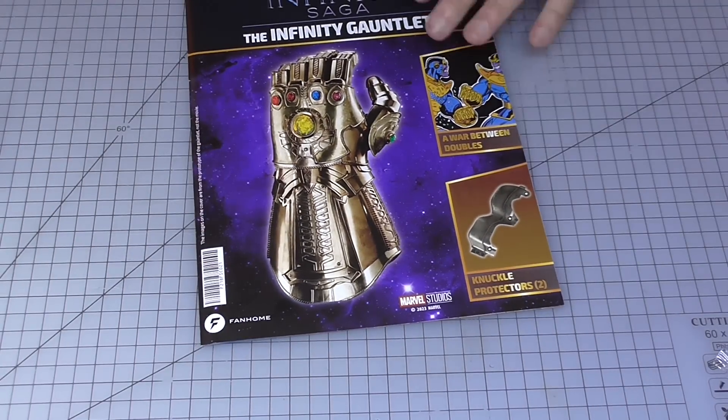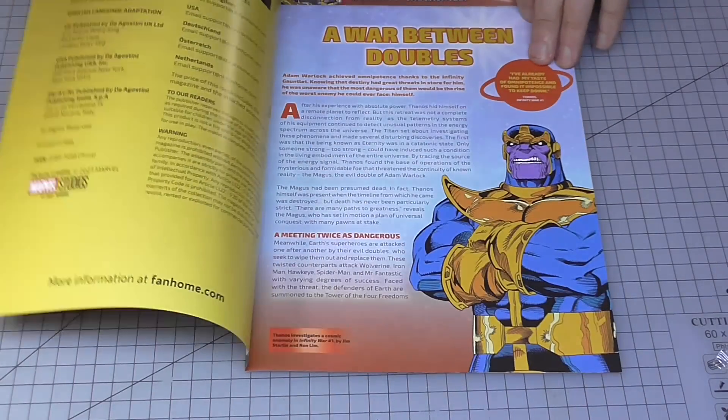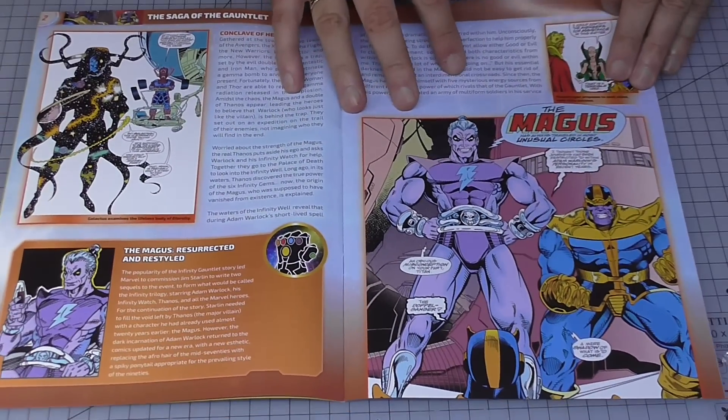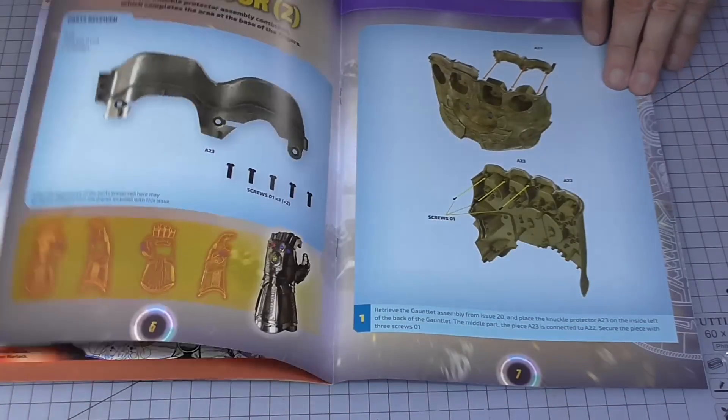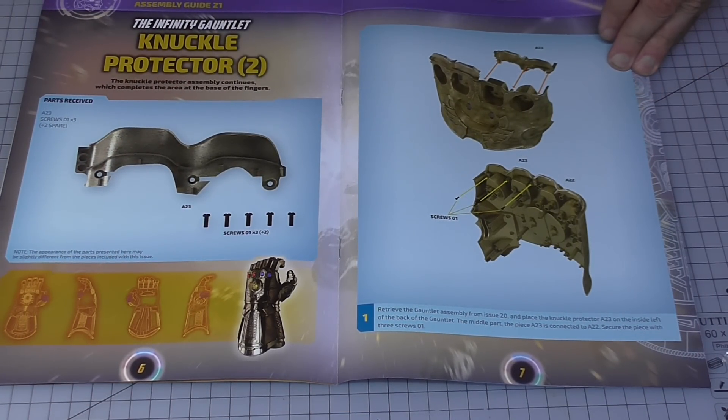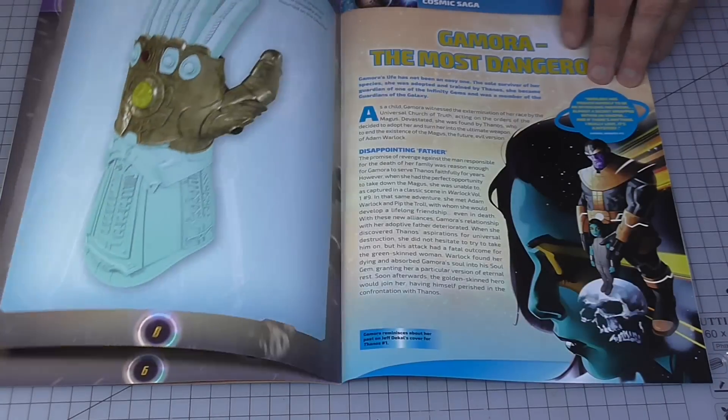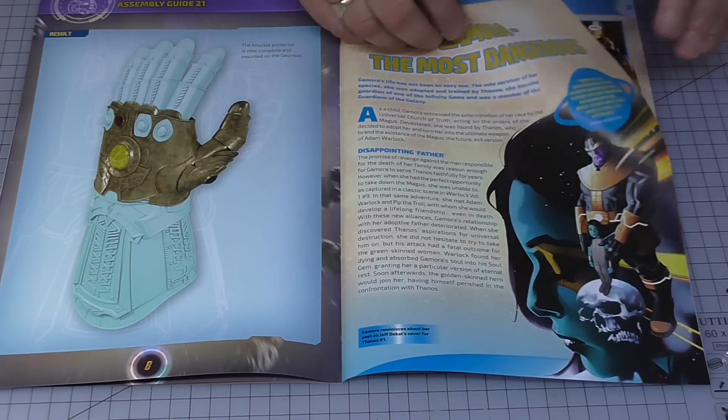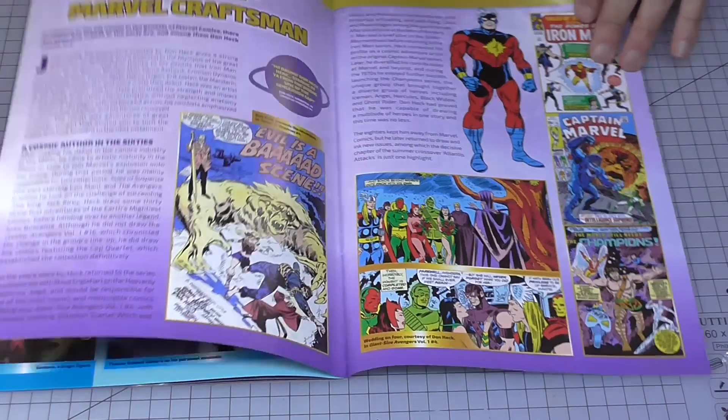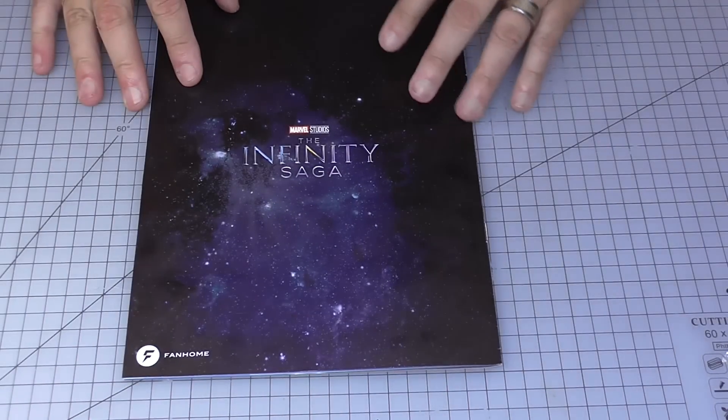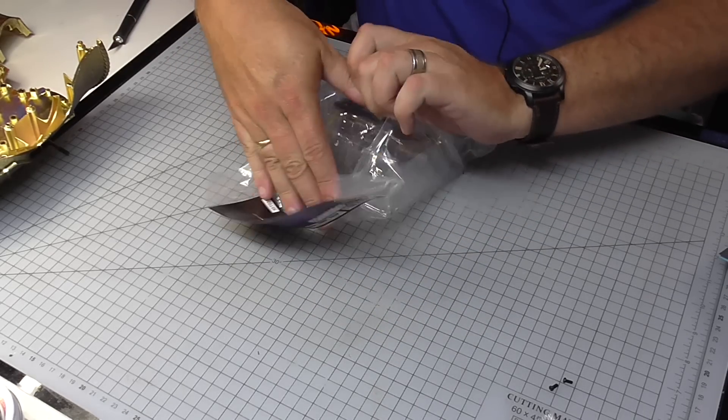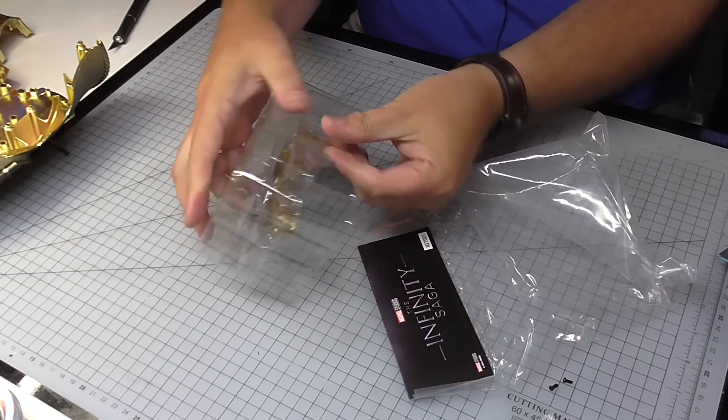So that leads us onto this last stage of this pack, stage 21. This is the magazine. And again, we've got another knuckle protector just there, which is just going to go onto the other side of the gauntlet. And again, I'll show you the rest of the magazine. I really did think we were going to mount the thumb in this stage, but we're not.